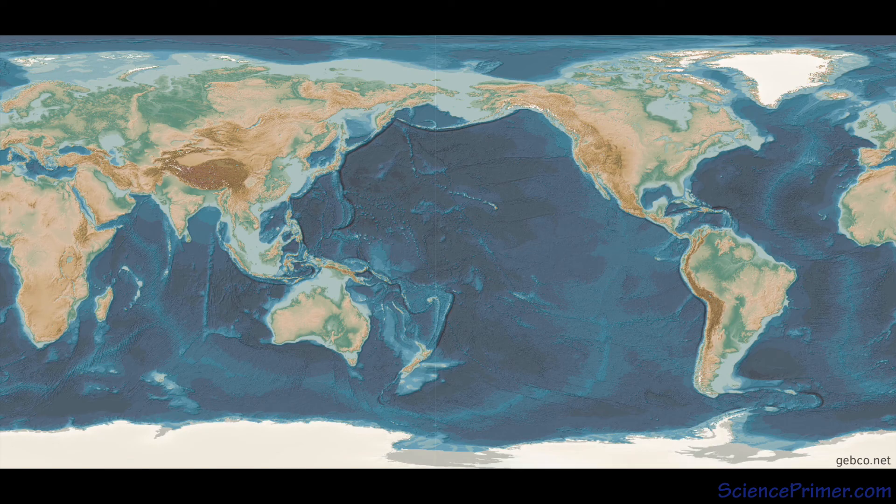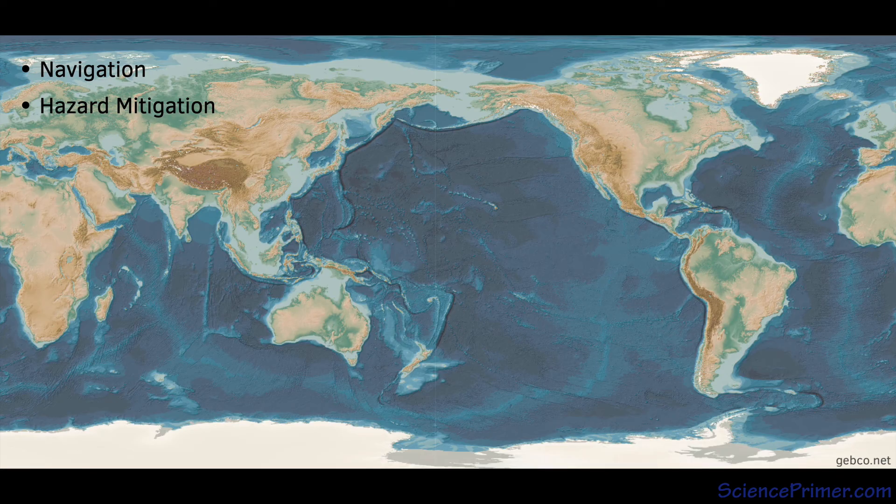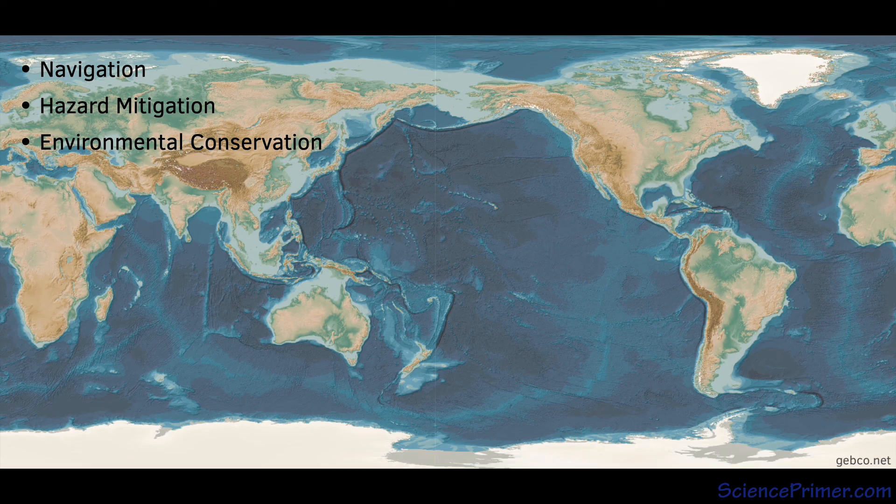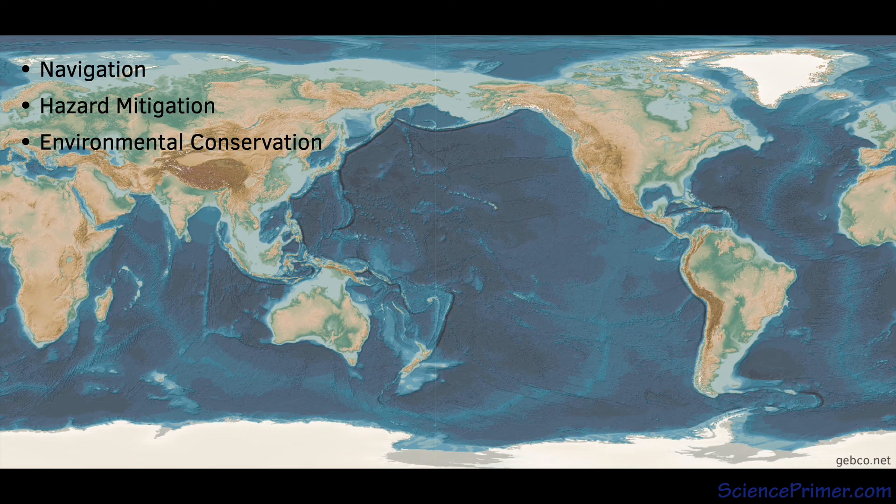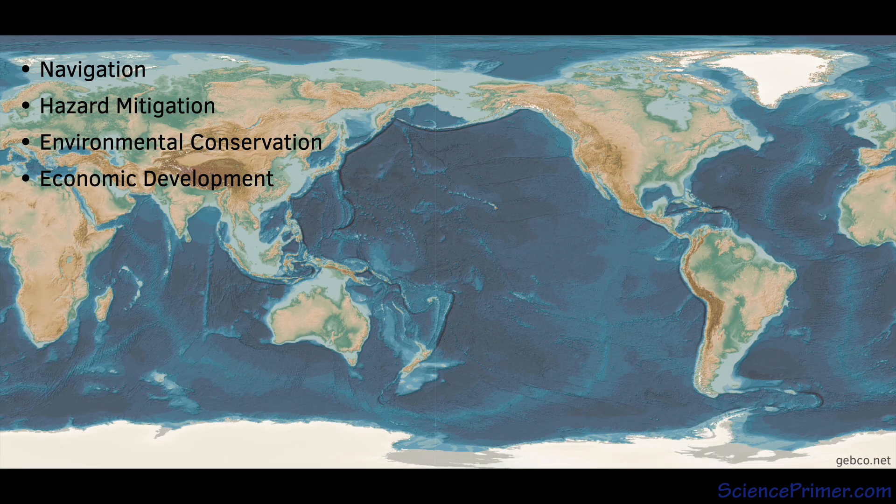As efforts to broaden sonar coverage continue, the global coverage provided by satellite-based maps aid in navigation, hazard mitigation, and environmental conservation because seafloor structure is a primary determinant of species distribution, allowing environmental managers to develop basic habitat maps and prioritize areas for conservation efforts. The maps also have economic value because the general geography of an area is a predictor of the presence of economically valuable resources.